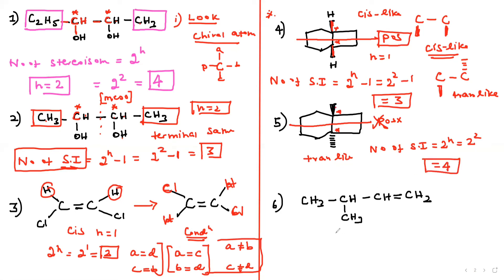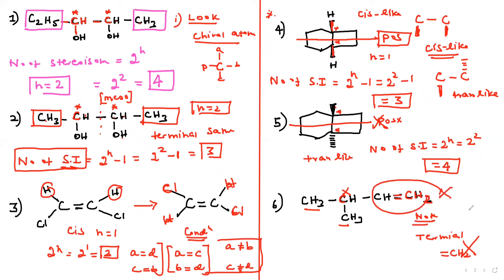Next molecule has a double bond and a chiral carbon. Check the double bond carbon — it has CH3 and CH3, which are the same groups, so no geometrical isomerism. The terminal is CH2 (double bond CH2), which is not favorable for geometrical isomerism. There is no chiral center either. Therefore the number of stereoisomers is zero.